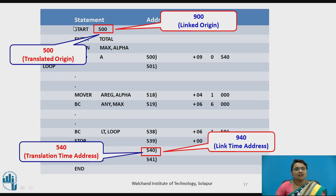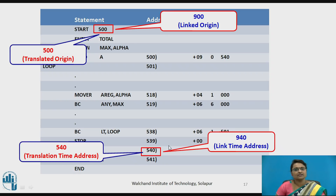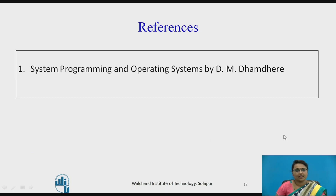In the example: 500 is the translated origin and 900 is the linked origin, so 540 becomes the translation time address and 940 becomes the linked time address. The origin and all addresses change accordingly.